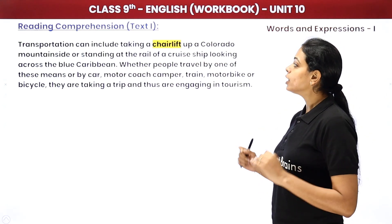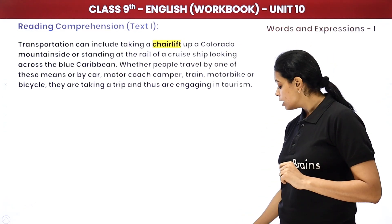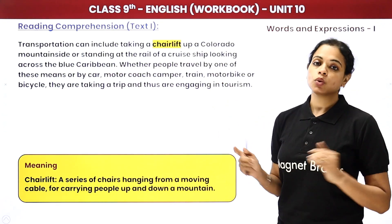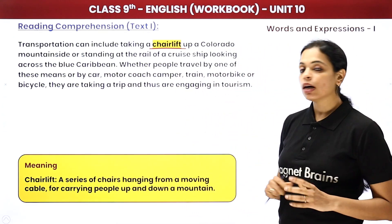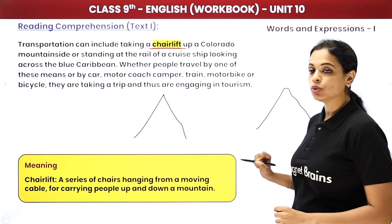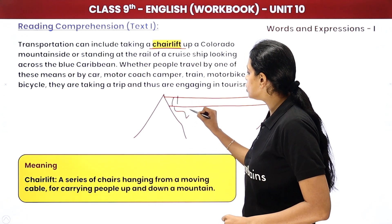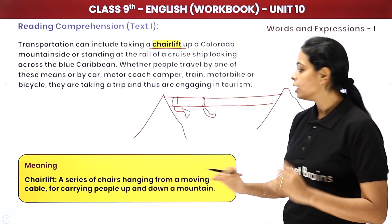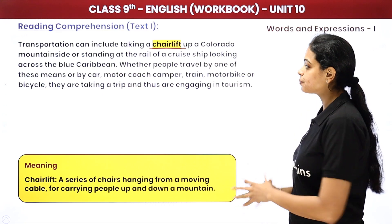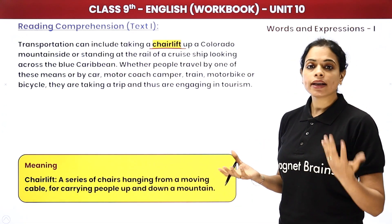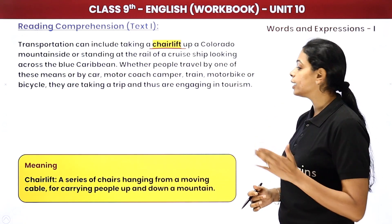Transportation can include taking a chairlift up a Colorado mountain side or standing at the rail of a cruise ship looking across the blue Caribbean. A chairlift is a series of chairs hanging from a moving cable for carrying people up and down a mountain — crossing from one mountain to another. Whether people travel by car, motor coach, camper, train, motorbike or bicycle, they are engaging in tourism.